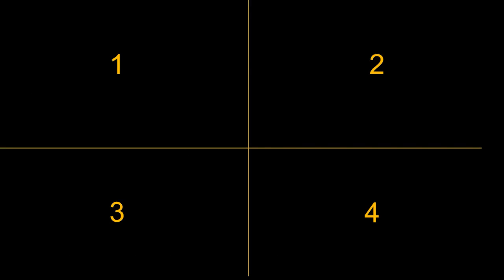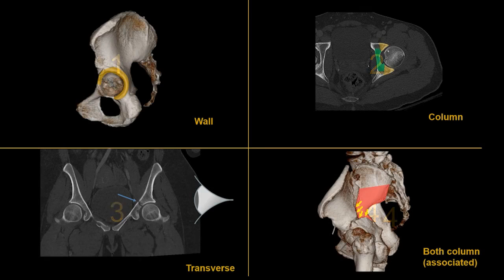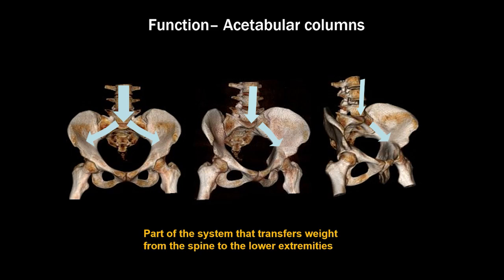There are only four things you need to know to classify these fractures. By the end of this talk, I want you to be very comfortable with what an acetabular wall, column, transverse, and both-column fracture are. So let's get started.